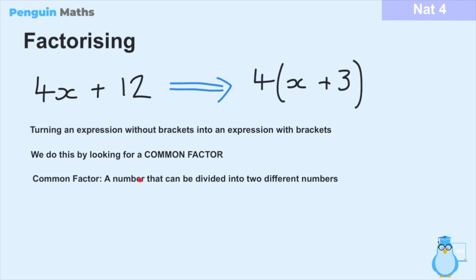A common factor is simply a number that can be divided into two different numbers. For example, the numbers 2 and 4 have a common factor of 2, because 2 divided by 2 gives us 1 and 4 divided by 2 gives us 2. We could also say that 2 and 4 have a common factor of 1, because any whole number can be divided by 1 — so 2 divided by 1 is 2, and 4 divided by 1 is 4. Therefore 2 and 4 have common factors of both 1 and 2.